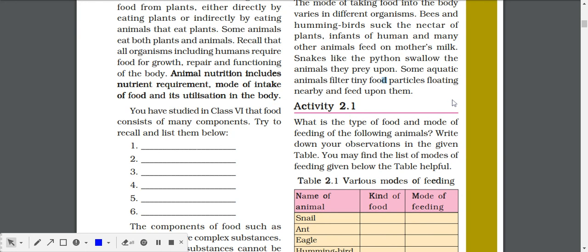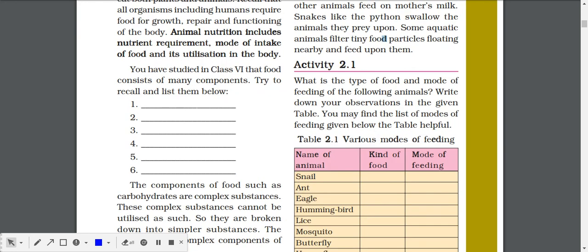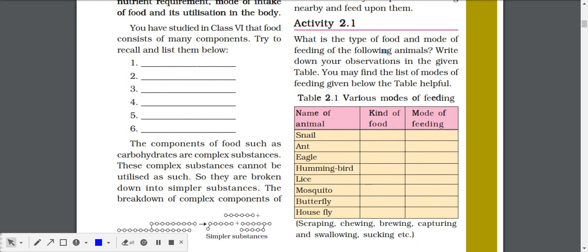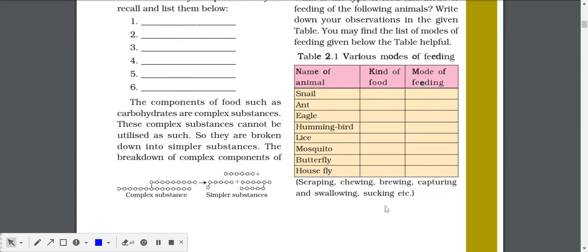Now Activity 2.1: In this activity you have to find what is the type of food and mode of feeding of various animals. These are the names of animals, the kind of food they eat, and mode of feeding. You have to search on the internet and fill this table at your home. You can comment in the comment section below our video and I will reply whether it's correct or not.